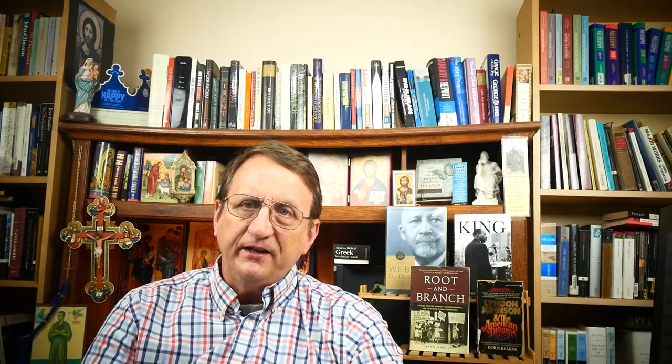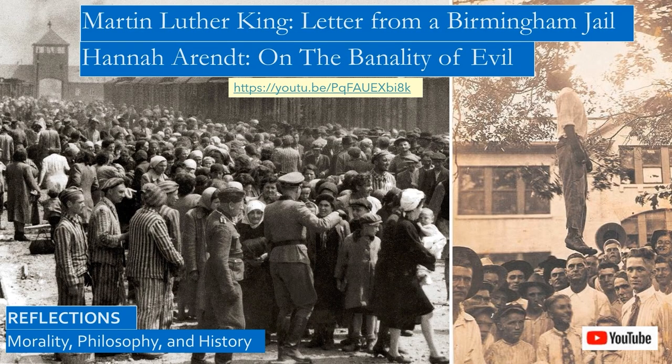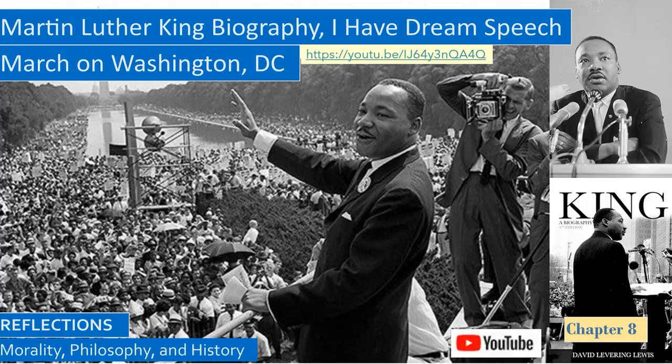Kennedy had proposed a major civil rights bill five months before he was assassinated in late 1963, but it was bottled up in the Senate in a filibuster. Martin Luther King had started to turn public opinion with his protests for civil rights in Birmingham and his famous 'I Have a Dream' speech in front of the Lincoln Memorial. When he became president, LBJ knew he would need a Republican senator to vote for cloture to halt the filibuster, and he persuaded Senator Dirksen to be that key vote.